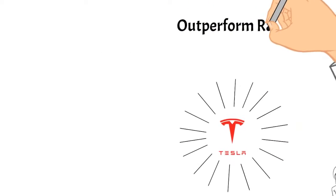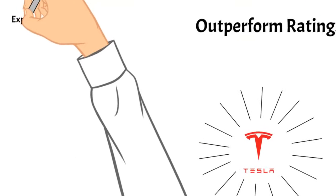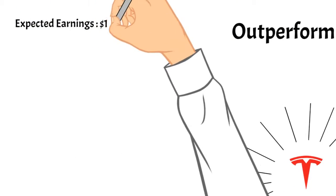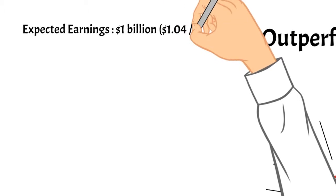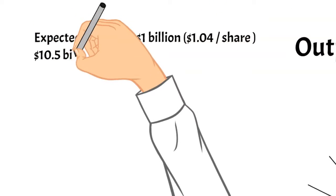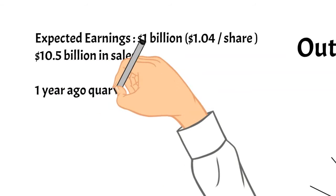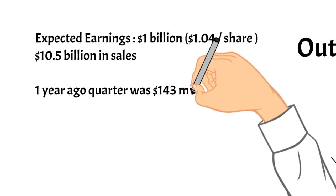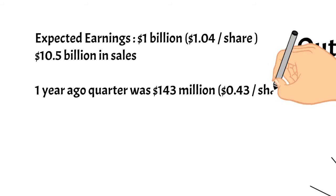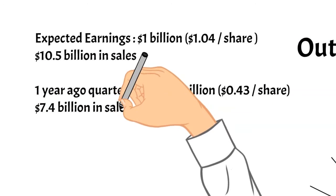It's all backed by actual numbers too. According to a group of analysts, this Wednesday after market closes, Tesla is expected to report earnings to be at about $1 billion and sales of about $10.5 billion. This is significant growth compared to last year's quarterly earnings which was $143 million and sales of $7.4 billion same time last year.